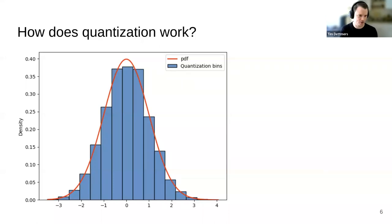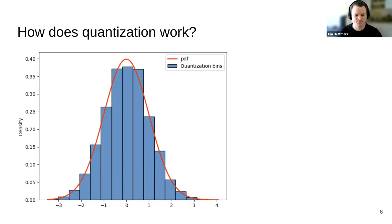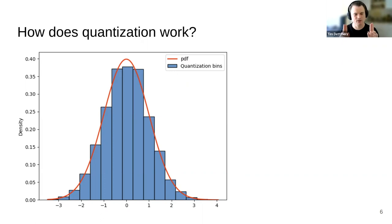If you have linear quantization — integer quantization — you can see it as a histogram where the width of each bin is equal. You slice up the normal distribution in equal parts, each with the same width, then take the middle value of each bin and quantize all values within that bin to the middle value. You can also have non-linear data types where the width of each bin can be different, so smaller bins around zero and larger bins at the edges.